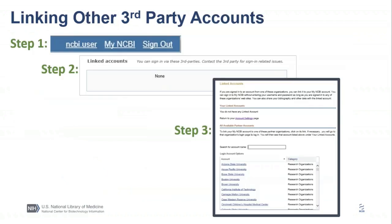After your account has been created, you can link additional third-party accounts such as ORCID, eRA Commons, HRA (the Health Research Alliance), and NSF. You may also link your Google account or your institution if listed, which provides additional ways to access your single account.